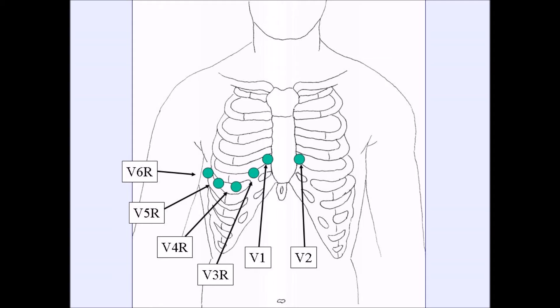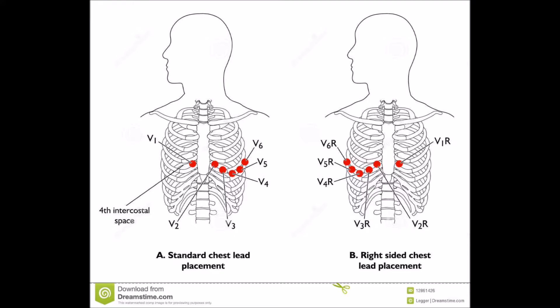And then all you would do is reverse the actual electrode placement. So you would just take V1 goes where V2 was, V2 where V1 goes, V3, V4, V5, etc.